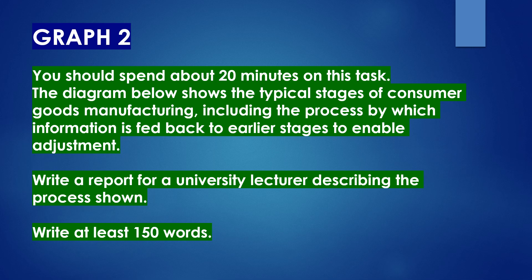You should spend about 20 minutes on this task. The diagram below shows the typical stages of consumer goods manufacturing, including the process by which information is fed back to earlier stages to enable adjustment. Write a report for a university lecturer describing the process shown. Write at least 150 words.